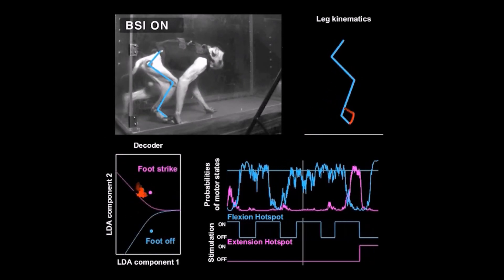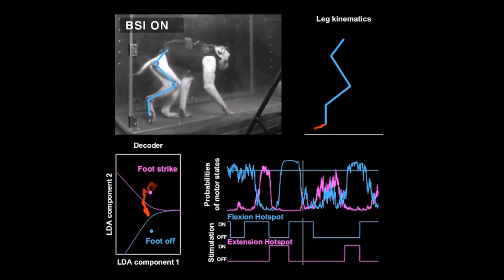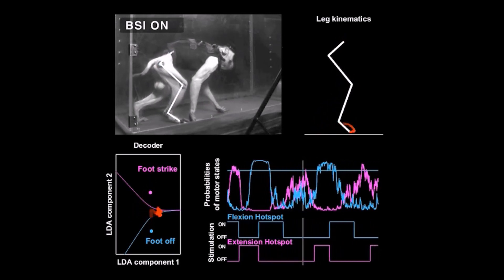The brain-spinal interface instantly restored coordinated weight-bearing locomotion of the paralyzed leg as early as six days post-injury.